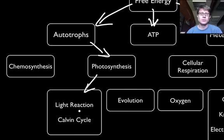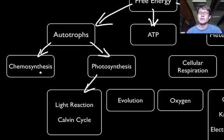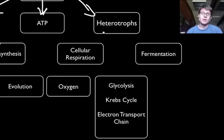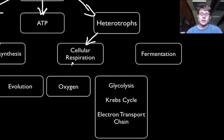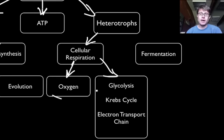Autotrophs on our planet mostly use photosynthesis, taking energy from the sun through the light reaction and the Calvin cycle to make sugars or macromolecules. There's an obscure group of organisms that don't have light available — they use chemosynthesis, utilizing energy found in chemicals to make their food. The other lifestyle is heterotrophs, which use cellular respiration — essentially oxygen, mitochondria, and sugar — to make ATP. The process is glycolysis, the Krebs cycle, and then the electron transport chain. If you don't have oxygen, you can also use fermentation.